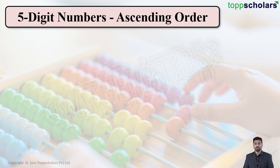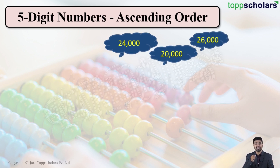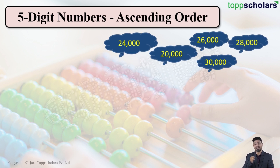Now we are talking about five-digit numbers. We will first study how to write five-digit numbers in ascending order. Let us take a few examples: 24,000, 20,000, 26,000, 30,000, and 28,000. We have to write these five numbers in ascending order — that is, from the smaller number to the larger number. So which is the smallest number from the given numbers?